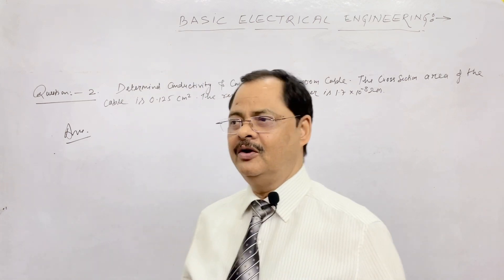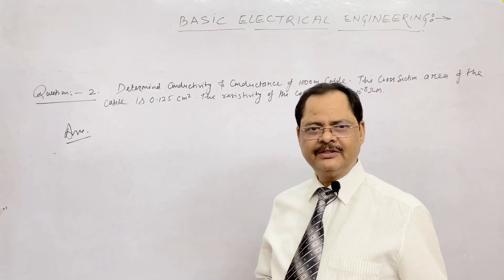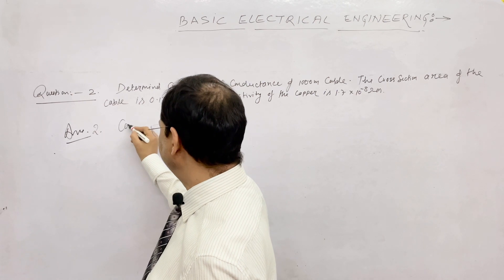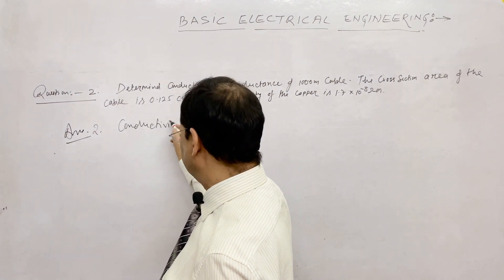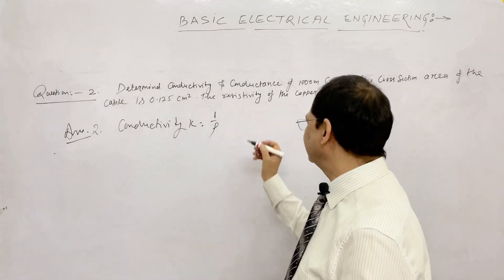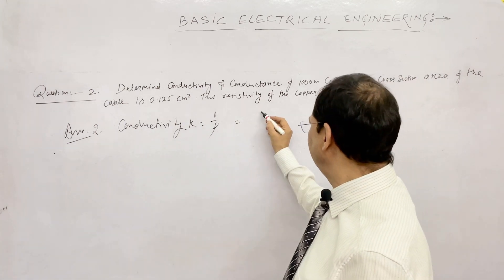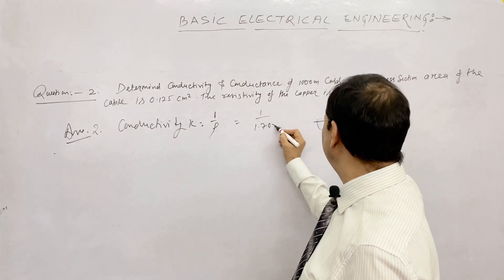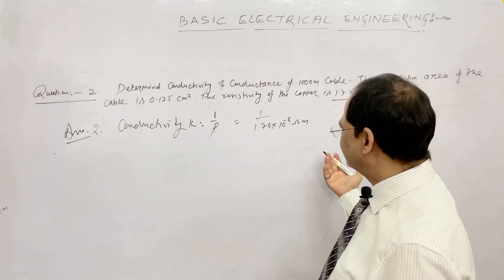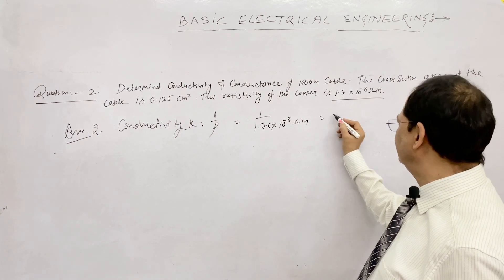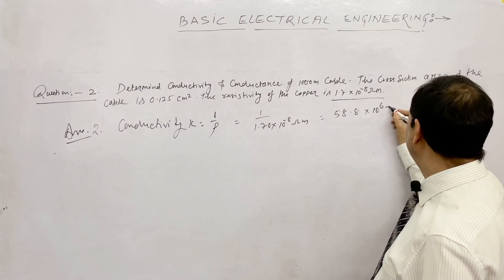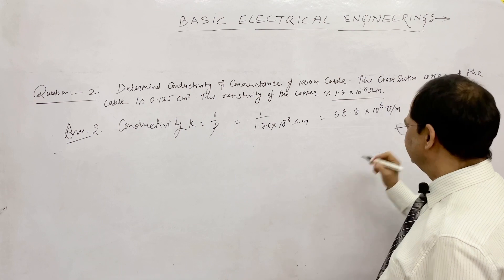Conductivity is the opposite of resistivity. Conductivity k = 1 / rho. Since rho = 1.70 × 10⁻⁸ ohm-meter, solving gives k = 58.8 × 10⁶ mho per meter.